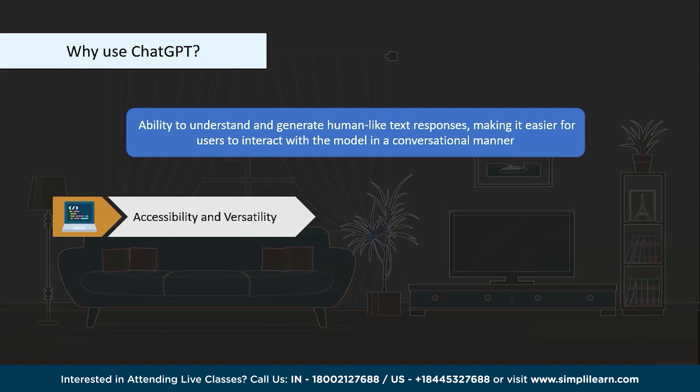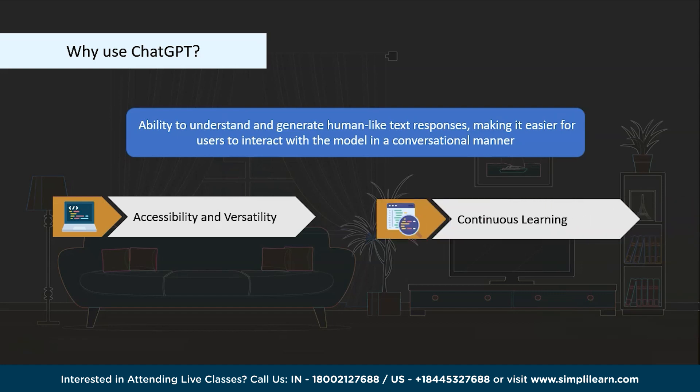ChatGPT's accessibility and versatility are also key advantages. It is accessible to anyone with an internet connection and can be used for a wide range of tasks — answering questions, providing explanations, offering suggestions, helping with creative writing, translating language, and more — making it appealing for both individual users and businesses. Additionally, language models like ChatGPT can be continuously improved by training on large amounts of data, leading to more accurate and useful responses over time.